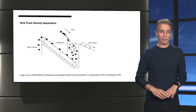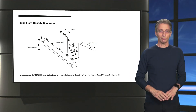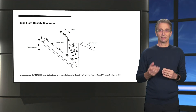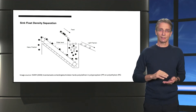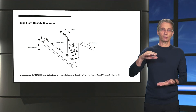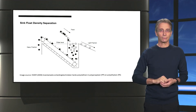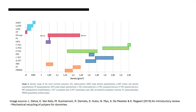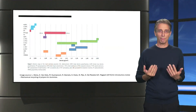Heavier plastics like polystyrene or ABS will sink to the bottom. By using additives that change the density of the flotation liquid, different types of polymers can be sorted in this way. However, the effectiveness of this method is limited by the fact that different polymers have density ranges that can overlap one another, as shown in this graph. Sink-float separation of polymers with overlapping density ranges would require additional technology that makes the flotation process more precise.